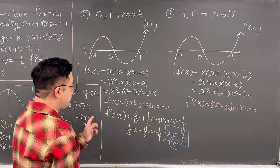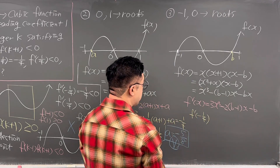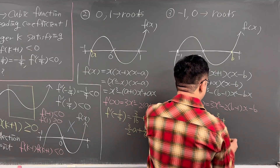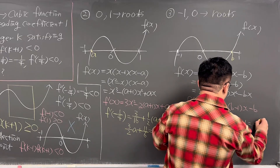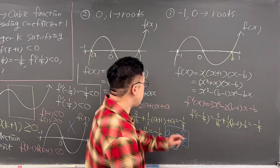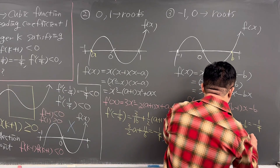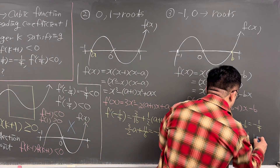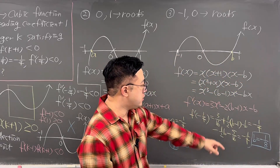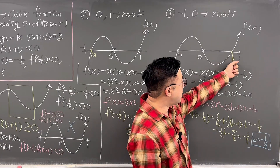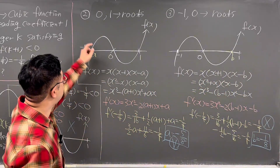For Case 3, plugging x = -1/4 into f'(x), we get 3/16 + (1/2)(b-1) - b = -1/4, which gives -(1/2)b - 5/16 = -1/4, so b = -1/8. But in Case 3, b has to be a positive value slightly less than 1 — b = -1/8 is negative, so this case is invalid. This confirms Case 2 is the one we need.